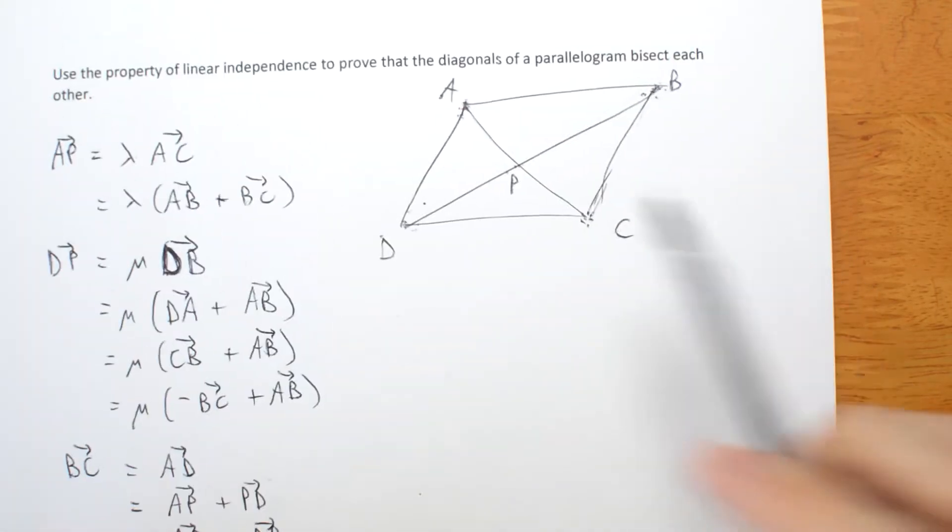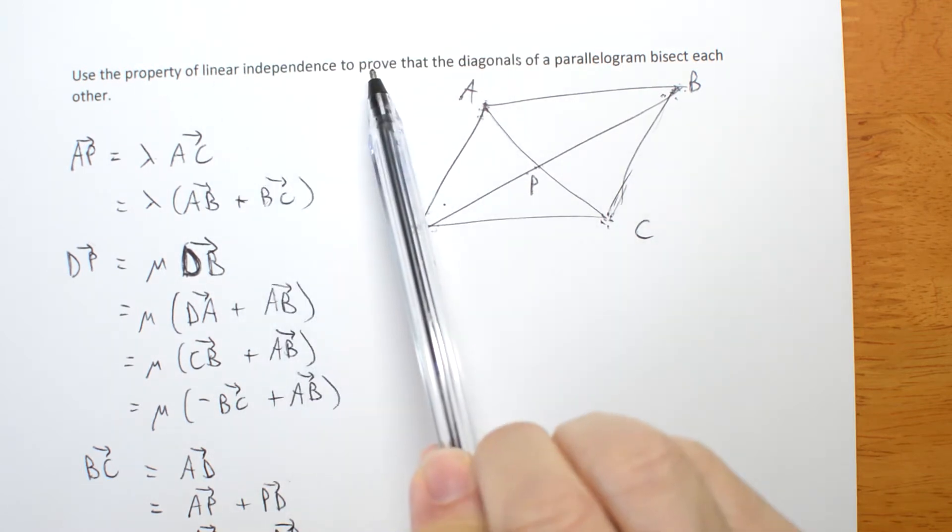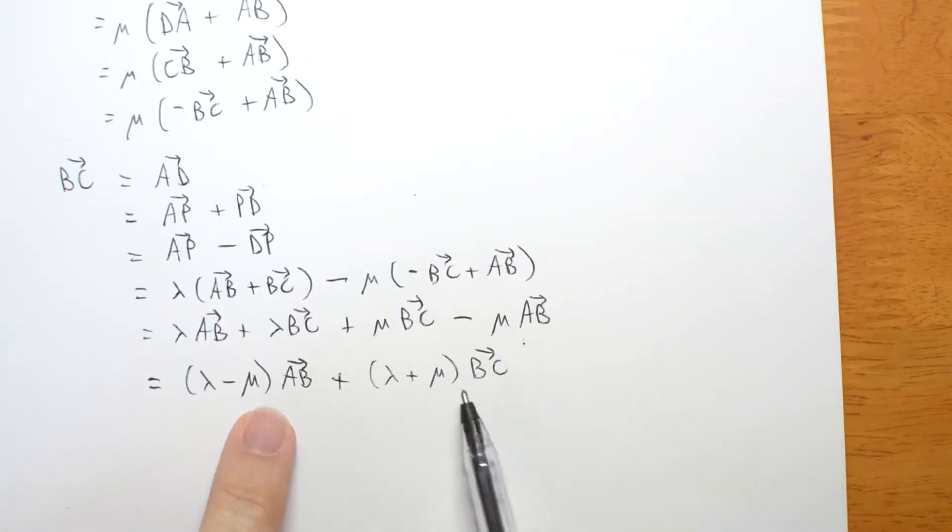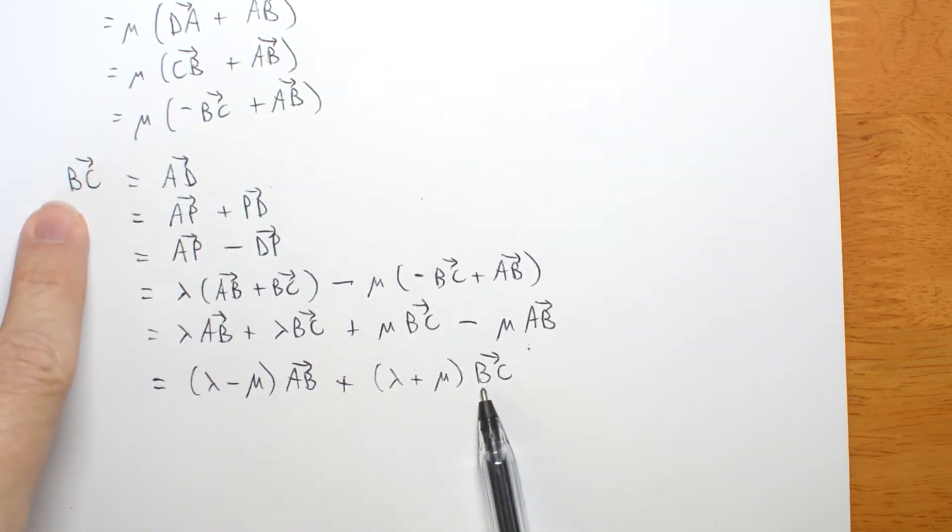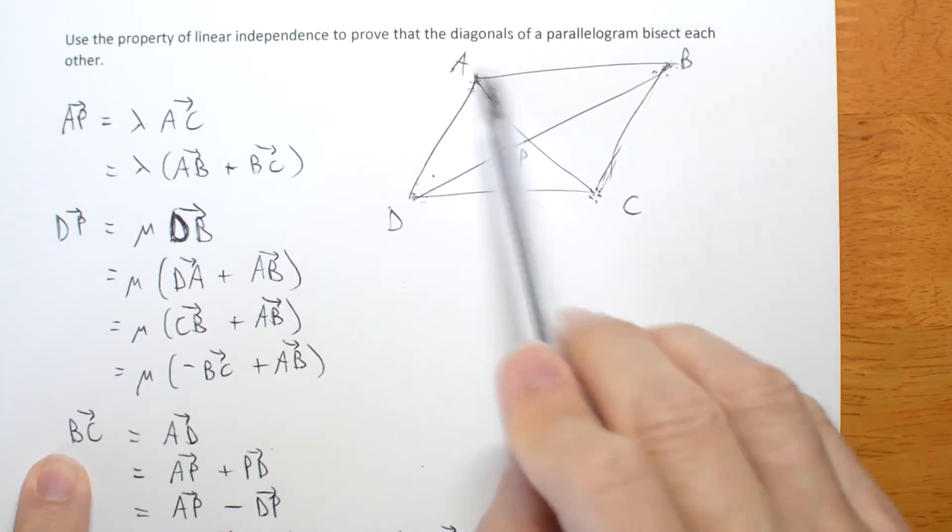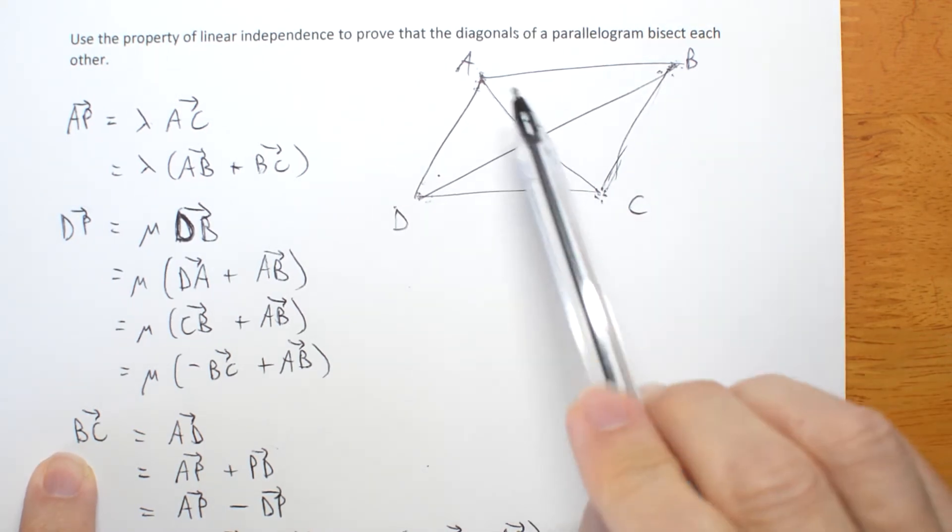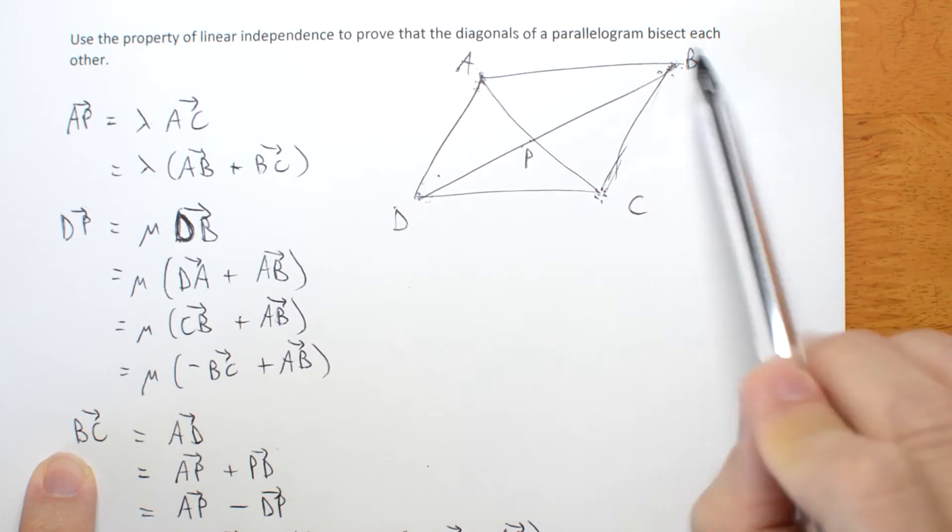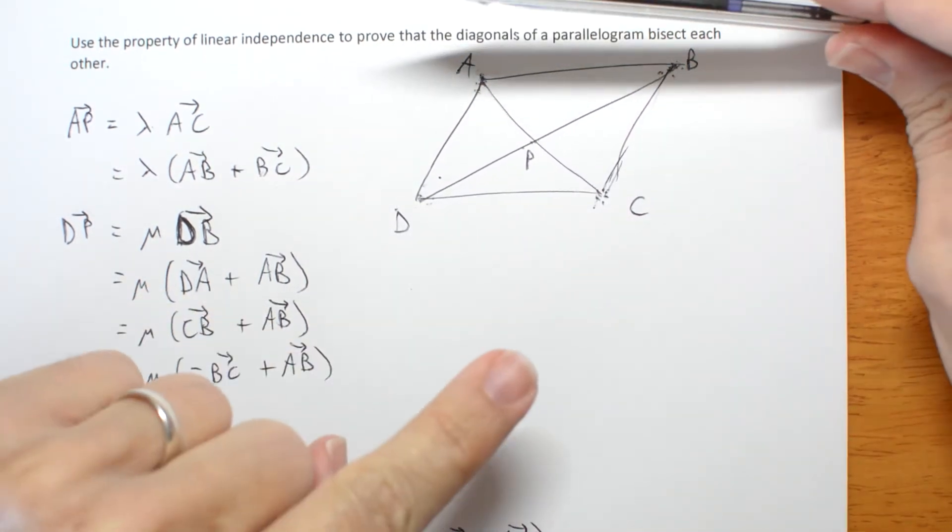Now, the question says to use linear independence. I have an equation here involving AB and BC and only BC here. I've got to try and use linear independence. AB and BC are linearly independent. If they weren't linearly independent, they would be parallel. And if they were parallel, this wouldn't be a parallelogram.